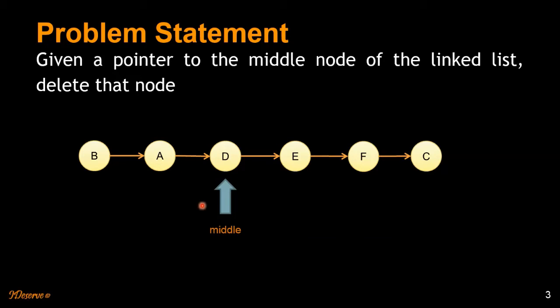So you have a middle pointer which you want to delete by maintaining the existing linked list. Basically, A should point to E, and E should point to F and C and so on, and node D should be deleted. Everything else should be preserved.